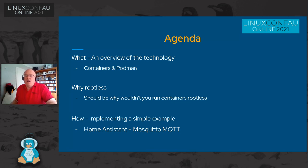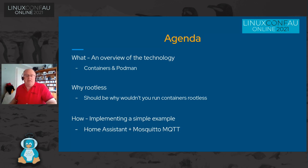A little bit about why we're going to talk about rootless containers, and at the end we're going to round it up with a bit of an example of how to use this in action. I'm going to use Home Assistant and Mosquitto MQTT as part of that example.